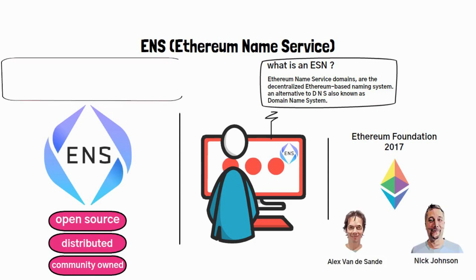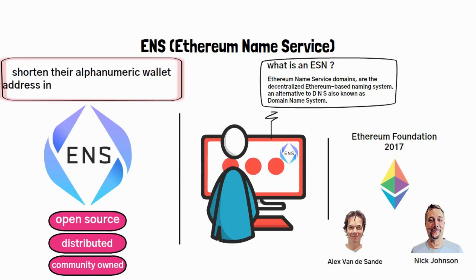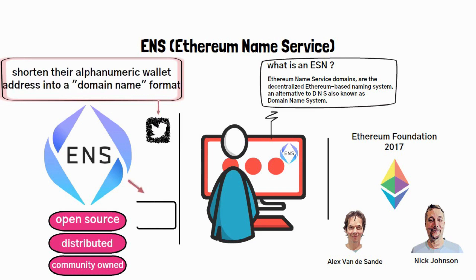An ENS domain essentially allows a user to shorten their alphanumeric wallet address into a domain name format, and is often used as an identity on social media channels like Twitter. This domain name address can then be used instead of a wallet address to send funds via an exchange or Web 3.0 wallet.